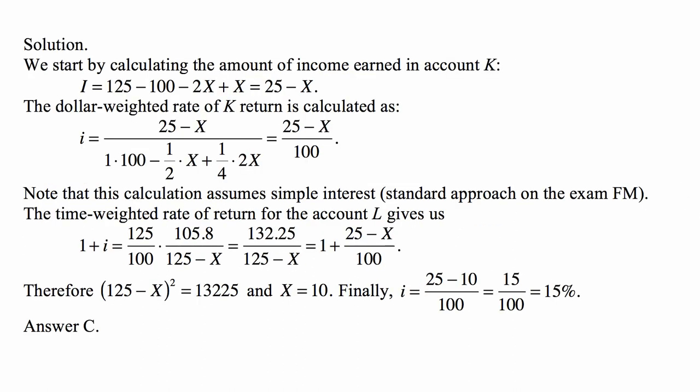We start by calculating the amount of income earned in account K. It's 25 minus X. The dollar-weighted rate of return of account K is calculated as 25 minus X, which is earned on 100 that was there at the beginning, so we can think about it as being in the account for the whole year. X, which is withdrawn for half a year, so minus one-half X plus 2X, which is put into the account for a quarter of a year, so plus one-fourth times 2X. That ends up being 25 minus X over 100.